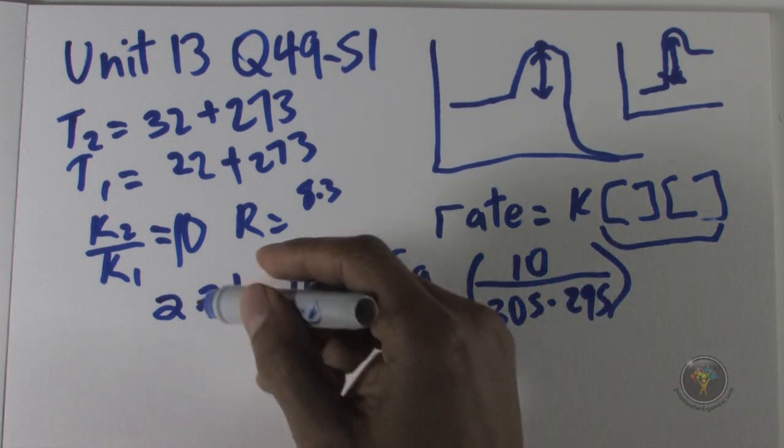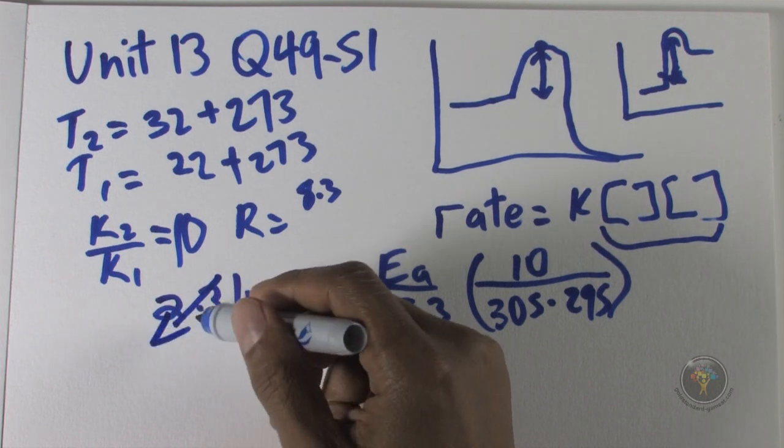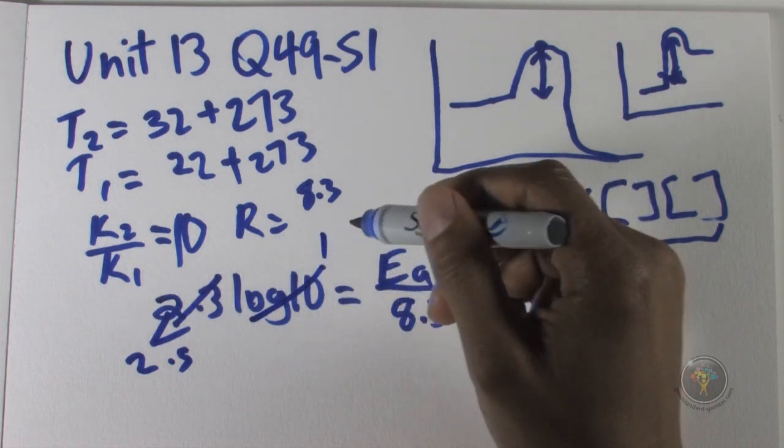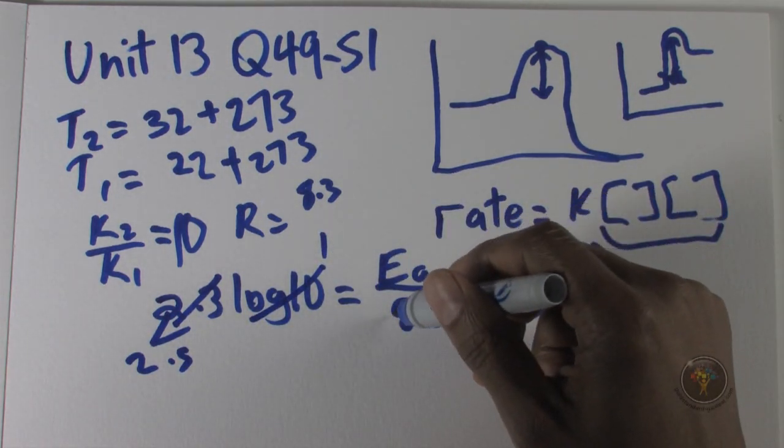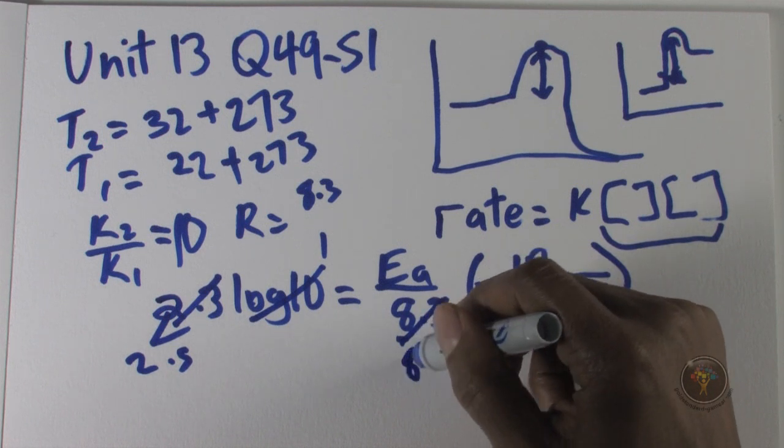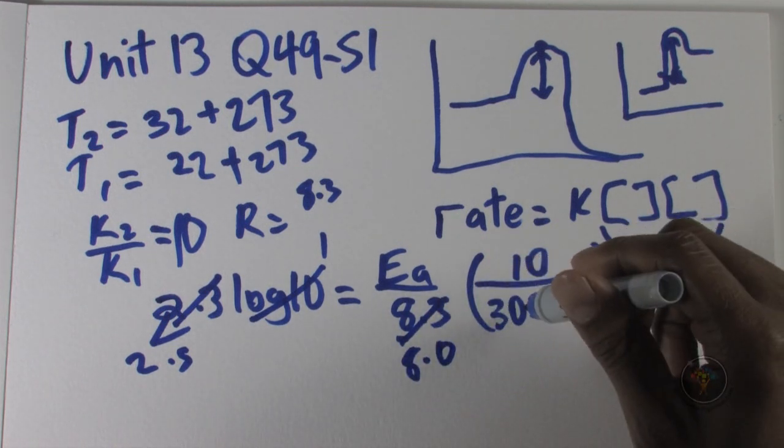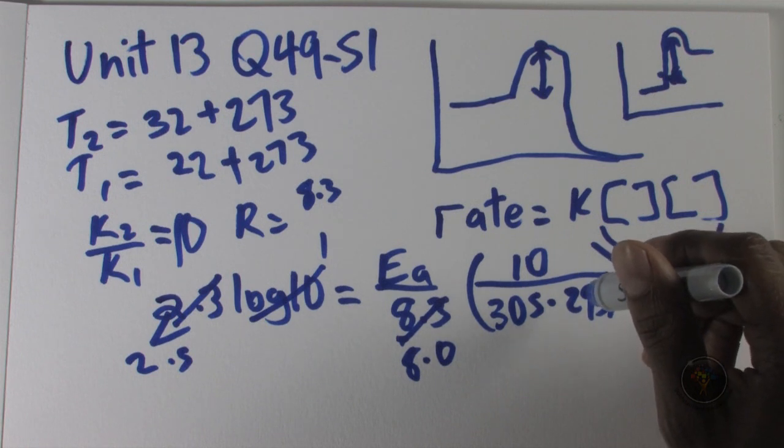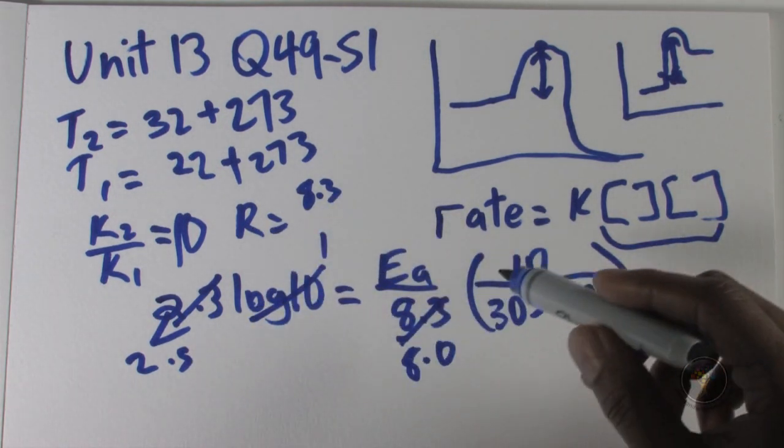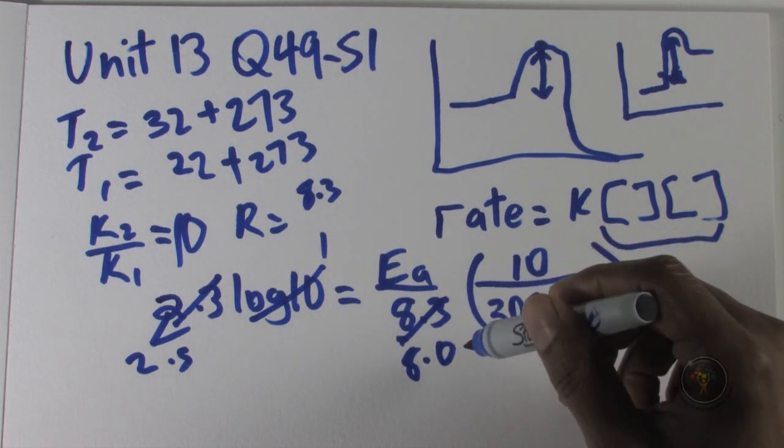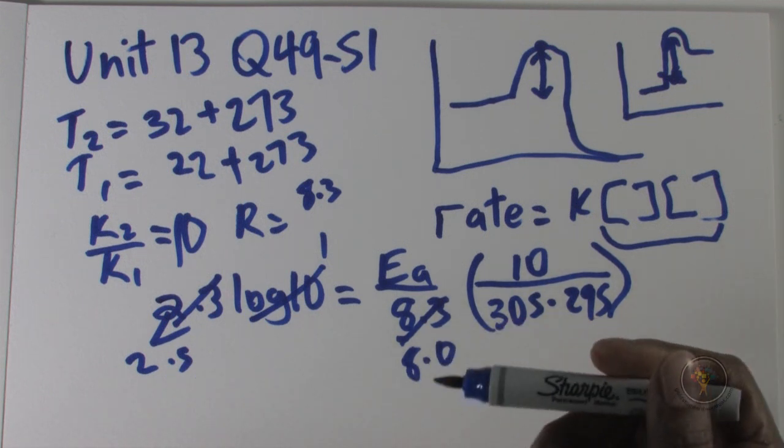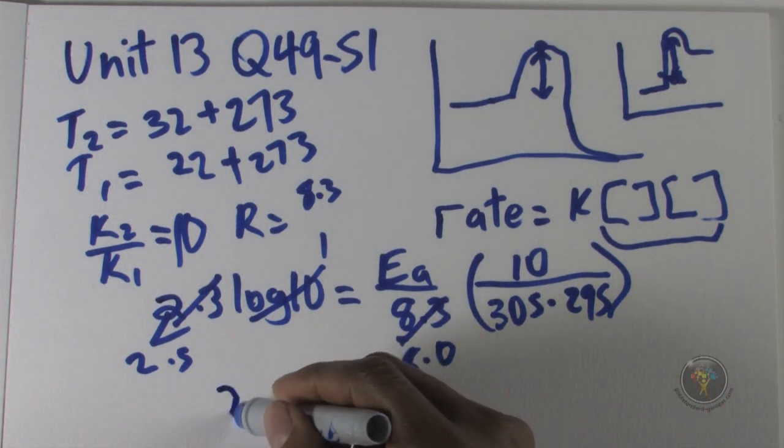We have all this data and now we do a little estimating. Because the answers are far enough apart, instead of 2.3 we're going to use 2.5. Log 10 we don't have to estimate, we know it's just 1. 8.3, I think we'll do better with 8. We have 305 times 295, we're going to treat that as 300 times 300.